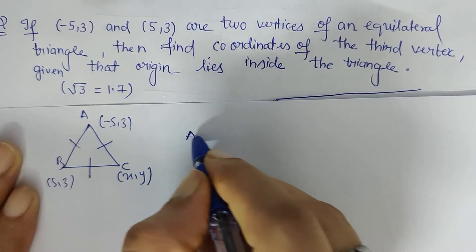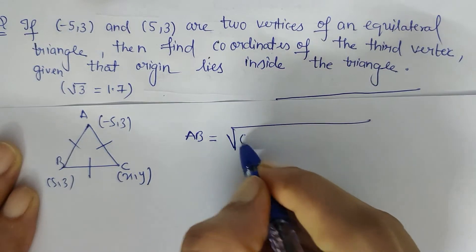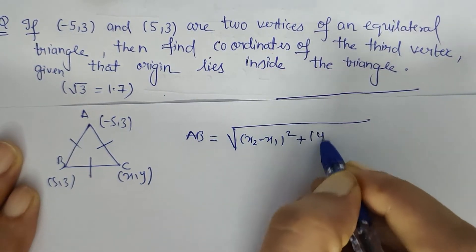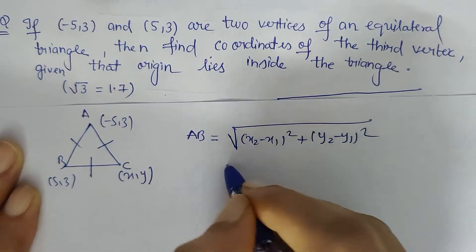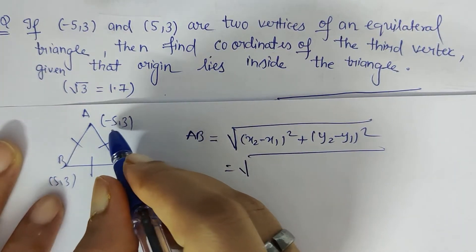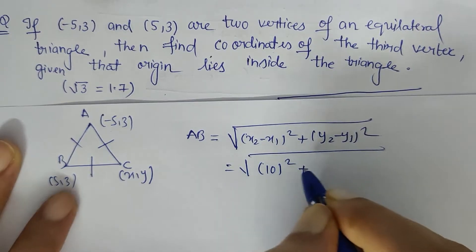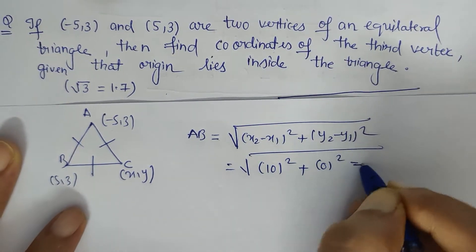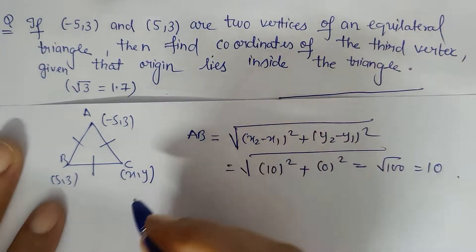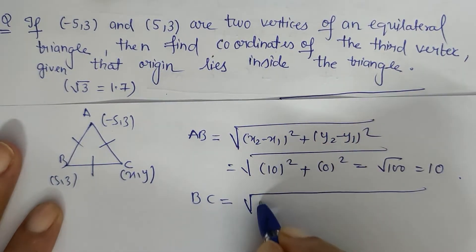For side AB, using the distance formula — x2 minus x1 whole square plus y2 minus y1 whole square — we get 5 plus 5 is 10, 10 squared, plus 3 minus 3 is 0. So AB is the square root of 100, which is 10.